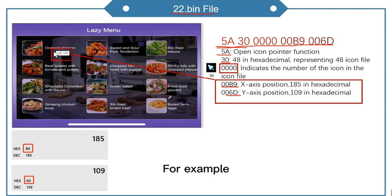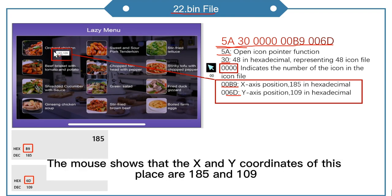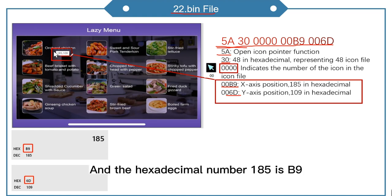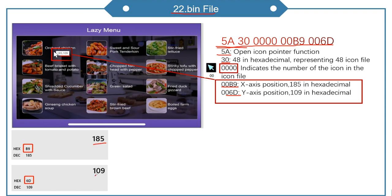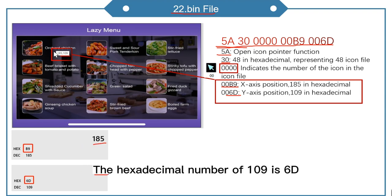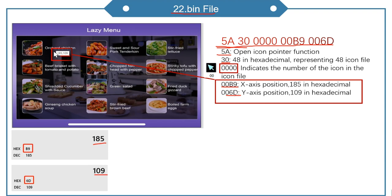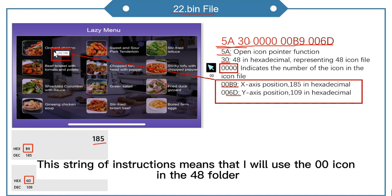For example, if the icon is to appear at a specific location, the mouse shows the X and Y coordinates are 185 and 109. The hexadecimal of 185 is B9, and the hexadecimal of 109 is 6D. So the instructions are 00B9 and 006D. In summary, this string of instructions means using the 00 icon in the 48 folder, displayed at the corresponding X and Y positions.